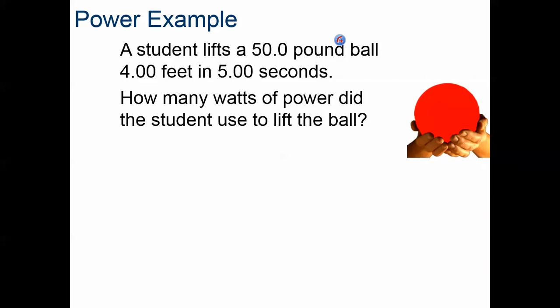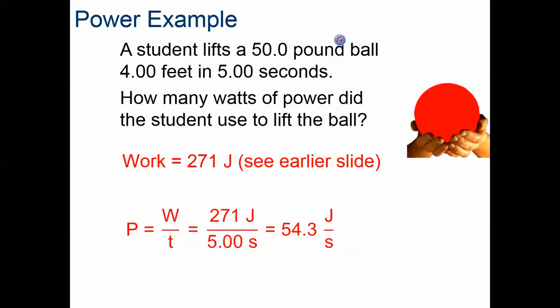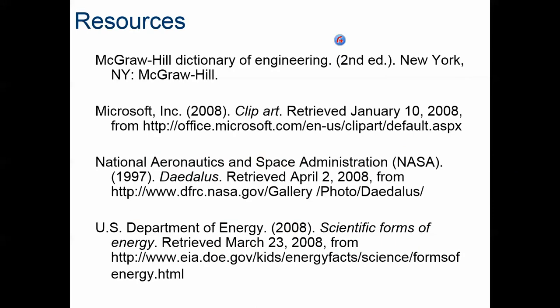Here's an example of power numerically. Remember that it's 271 joules to move this ball four feet in five seconds due to the conversions we saw. But now, if we consider how much power was used, we would just take the amount of work we did and divide it by the time that we applied that work. So, 271 joules over five seconds would be 54.3 joules per second or 54.3 watts. That's it. That's the particular presentation. We'll talk about the actual activity in class.